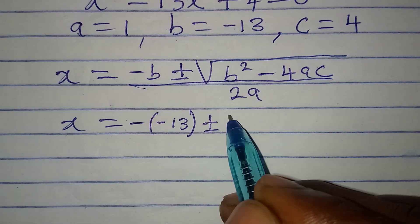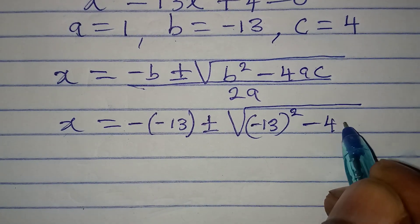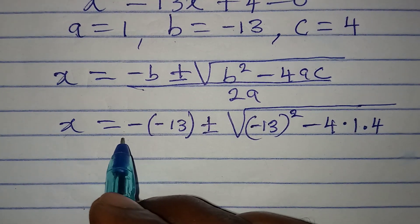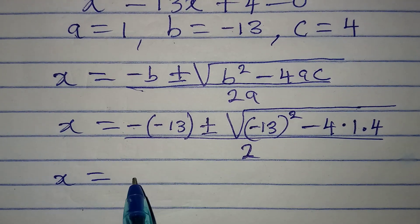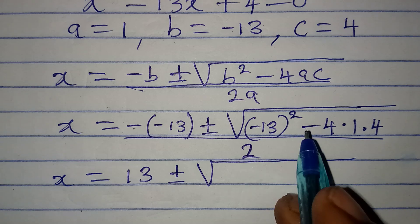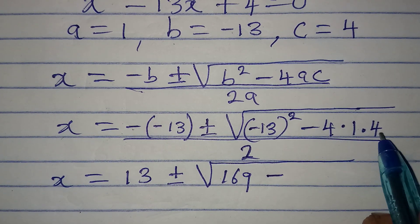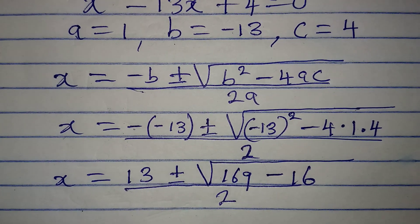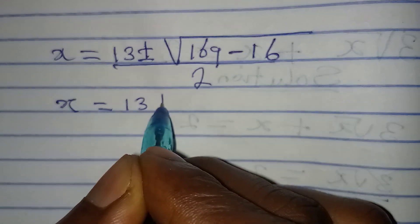Substituting: x = (--13 ± √((-13)² - 4·1·4)) / (2·1). Negative negative 13 gives us positive 13. Then (-13)² = 169, and 4 times 4 = 16. So we have x = (13 ± √(169 - 16)) / 2 = (13 ± √153) / 2.